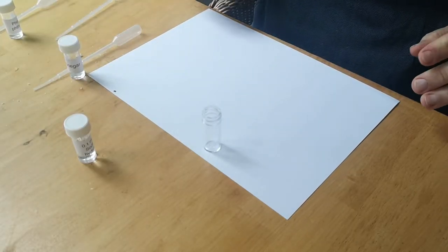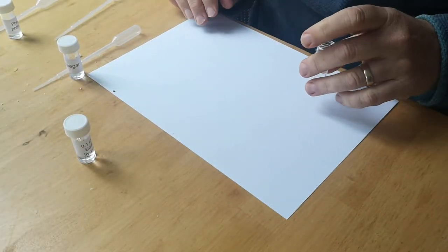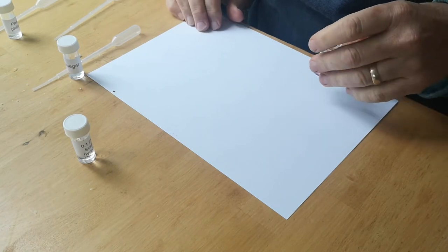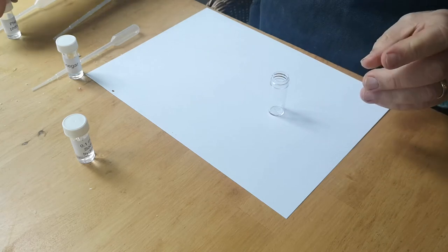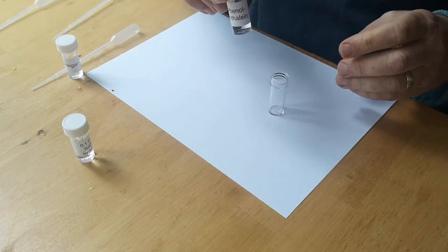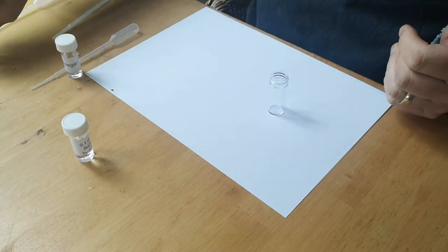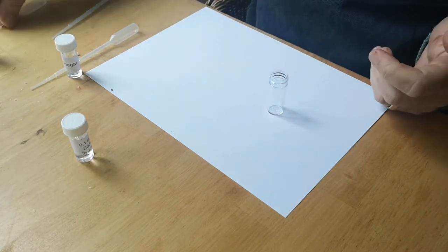Right, so welcome back to experiment 2. What you're going to need for this is the contents of pack 2, but also from experiment 1 you will need the phenolphthalein indicator and a plaster pipette.